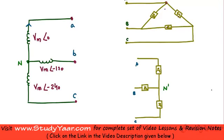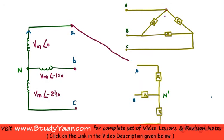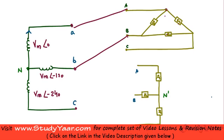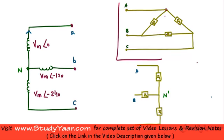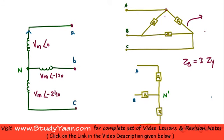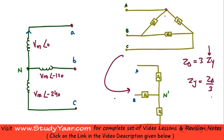Similarly, if you have a star-delta network — we have only analyzed a star-star network where my source is star and my load is also star; we haven't analyzed a star-delta network. So if you are supposed to analyze a star-delta network, what you could do is simply convert this delta load into a star node. We know Z_delta is three times Z_Y, so if I were to convert this into an equivalent Y network, the impedances would be given by Z_Y = Z_delta divided by three. I can convert this into an equivalent star network by simply dividing my individual phase impedances by three.